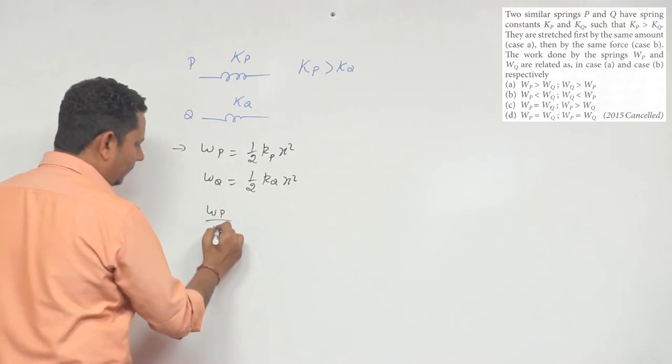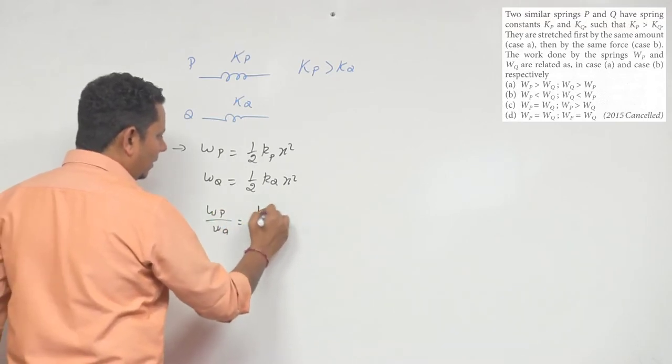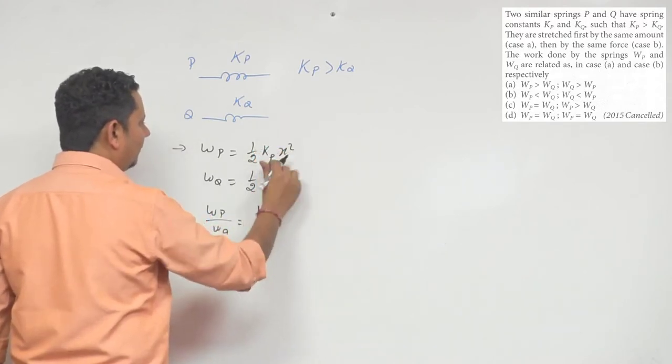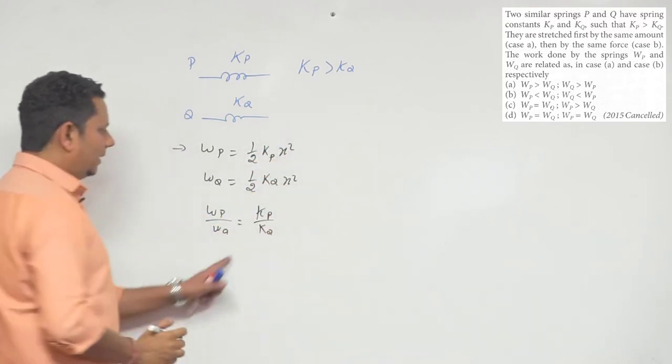So WP divided by WQ will be equal to Kp divided by Kq.